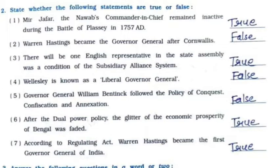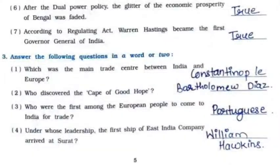Sixth: After the dual power policy, the glitter of the economic prosperity of Bengal was faded — it is True. Seventh: According to the Regulating Act, Warren Hastings became the first Governor General of India — it is True. Now the third question: Answer the following questions in a word or two.